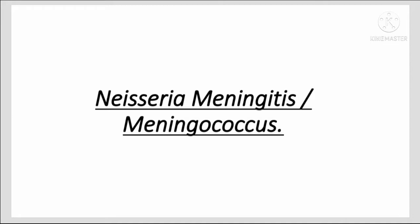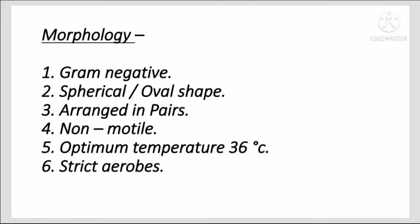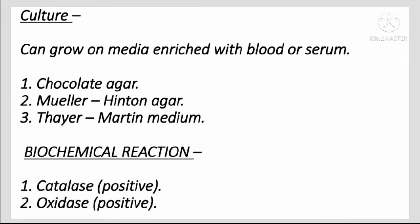In this video we are going to talk about Neisseria meningitidis, or meningococcus. Morphology: gram negative, spherical or oval shaped, arranged in pairs, non-motile. Optimum temperature is 36 degrees Celsius. Strict aerobes.